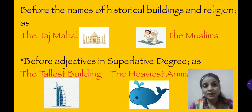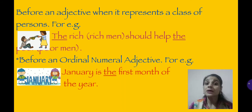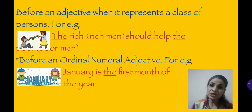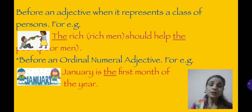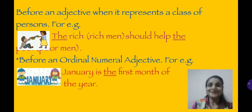The heaviest animal, the best student — before superlative degree, we use 'the'. Next: before an adjective when it represents a class of persons — the whole class. Like, 'the rich should help the poor.' When I say 'the rich', I am not talking about one rich man — I am talking about all rich people. So I use 'the rich', which represents all rich people. So, 'the rich should help the poor'. Next: before an ordinal number, we also use article 'the'. For example, January is the first month of the year, February is the second month. Understood?